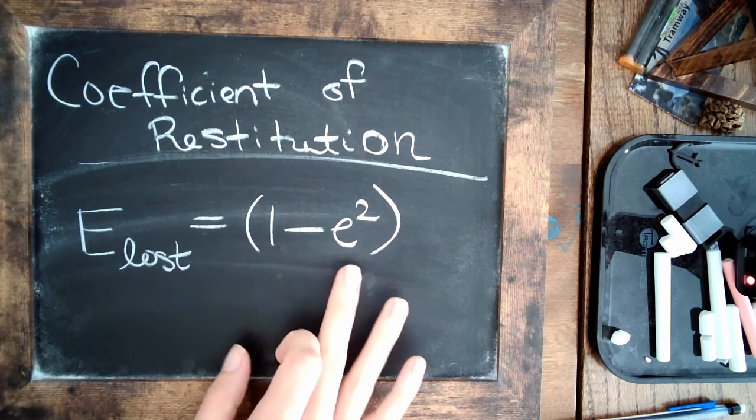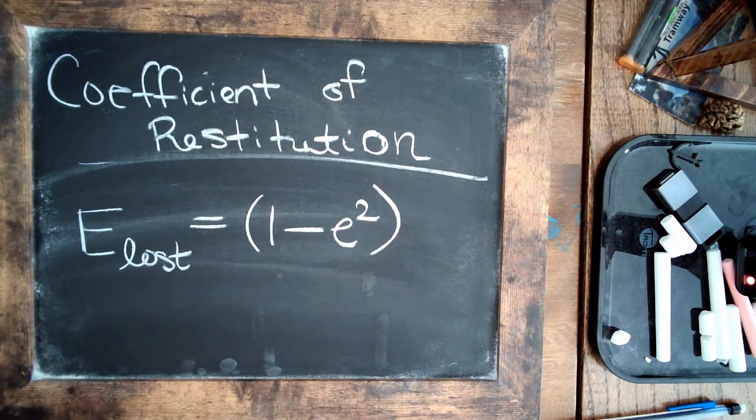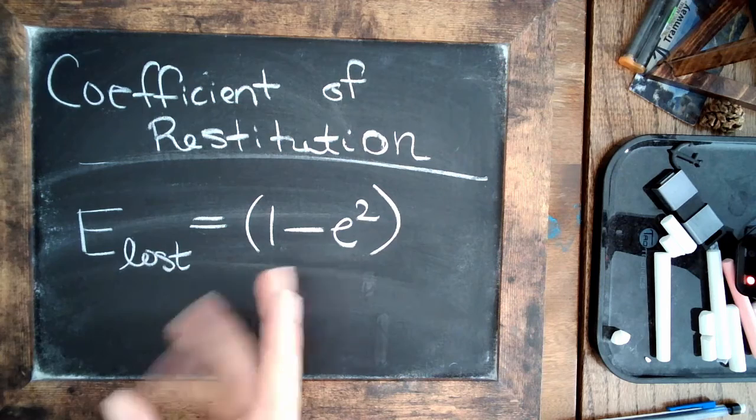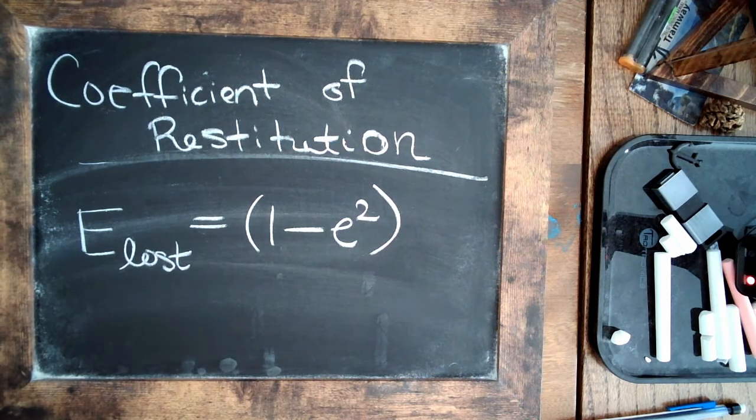squared. So if e is one, again, in the perfectly elastic case, the energy lost is one minus one, or zero. Energy is in fact conserved.